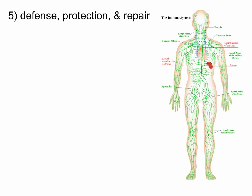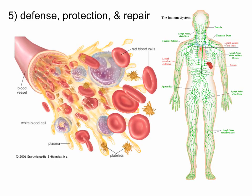Defense, protection, and repair is another function of connective tissue. That brings us back to the lymphatic and immune systems, as well as the cardiovascular system, because that's how different kinds of white blood cells, platelets, and all the other materials you need to heal are brought to the place you need them.